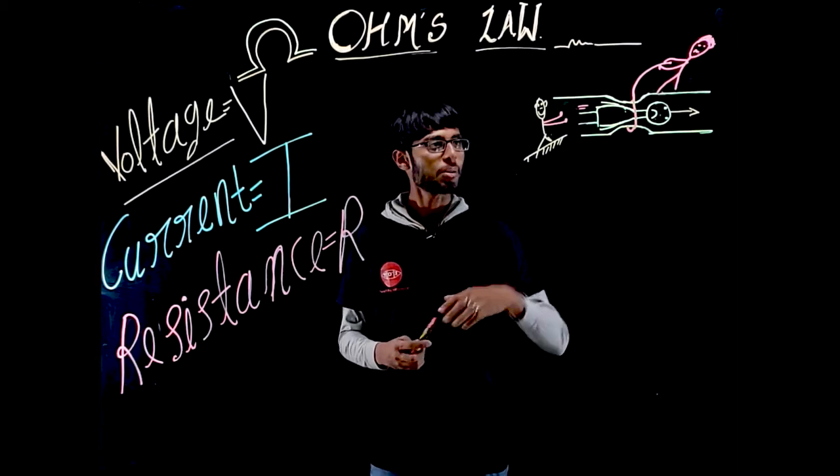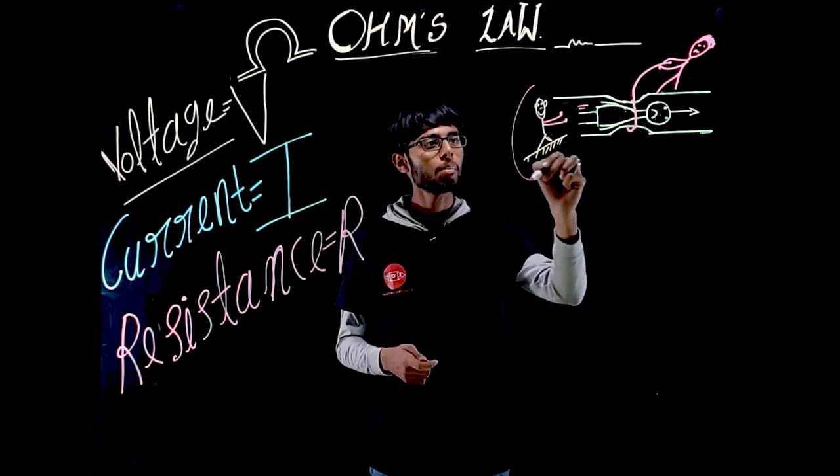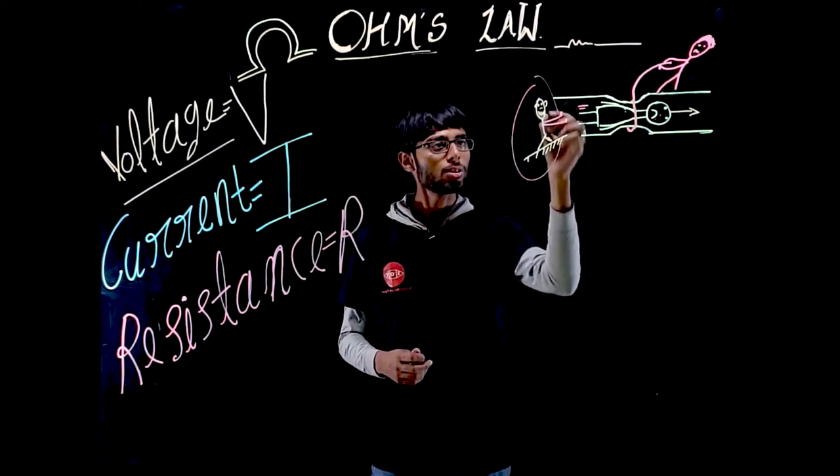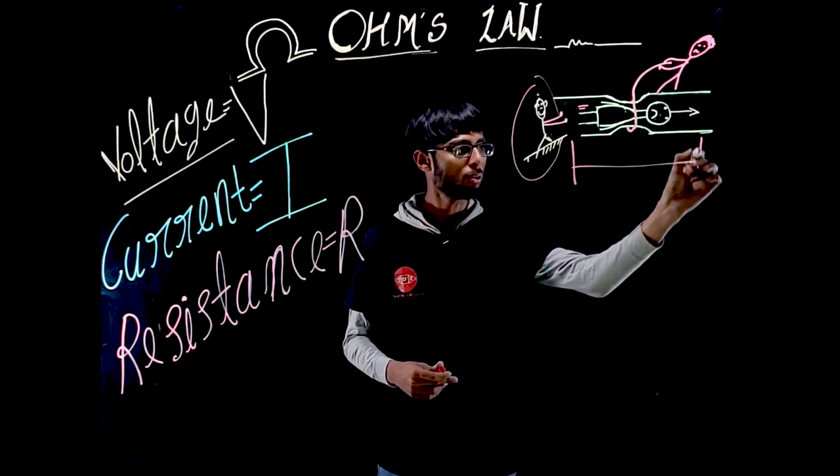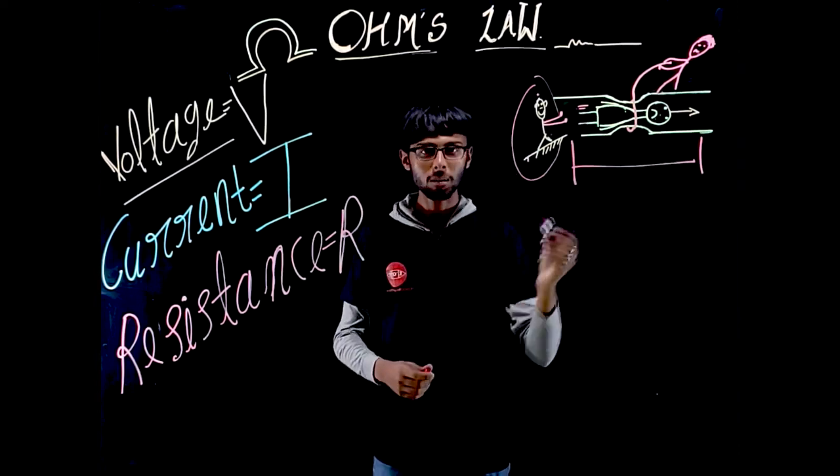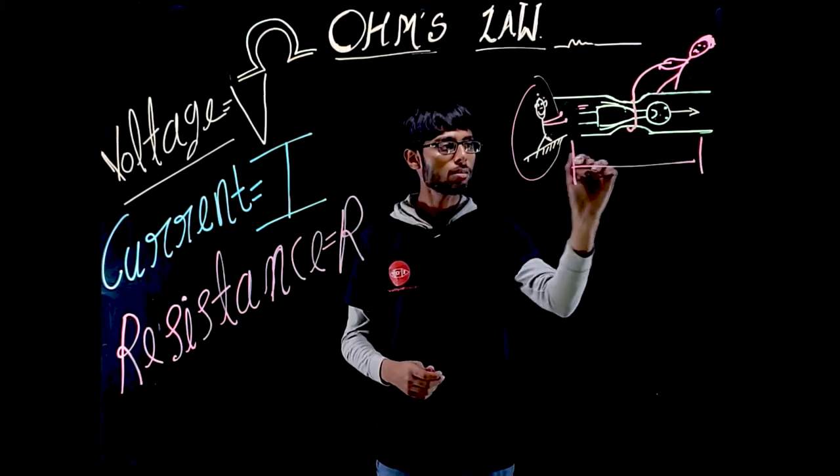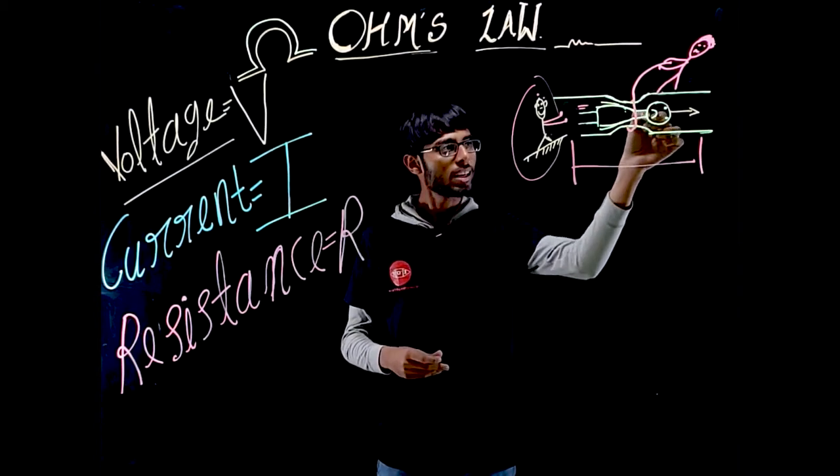Consider an analogy here. This cute little boy is trying to push another boy who doesn't seem to be happy. This boy represents the voltage, or potential difference across the conductor. This green colored piece is a conductor which can conduct current. This boy is the voltage or potential difference which we apply across the conductor.